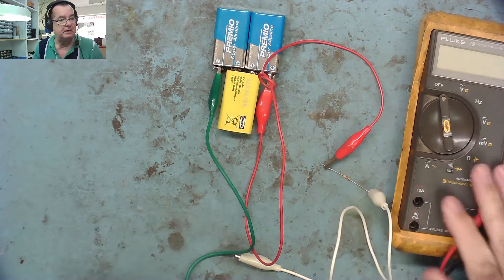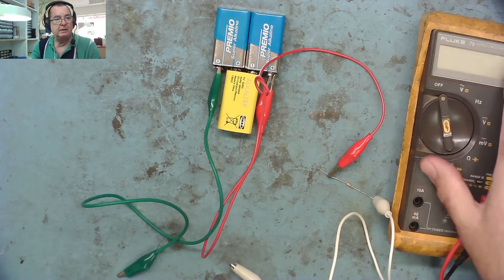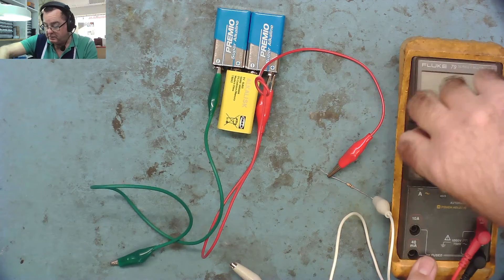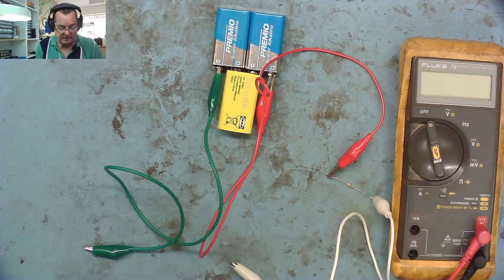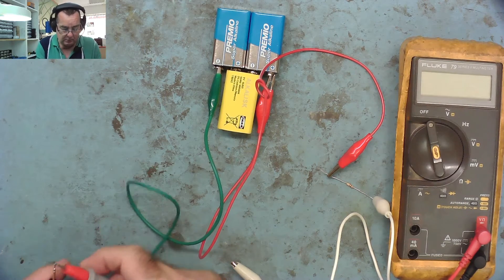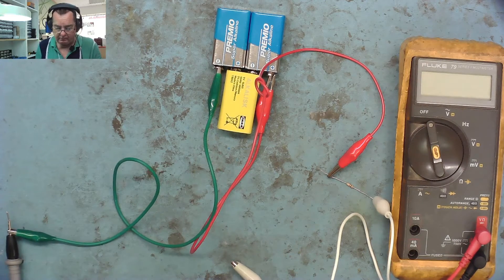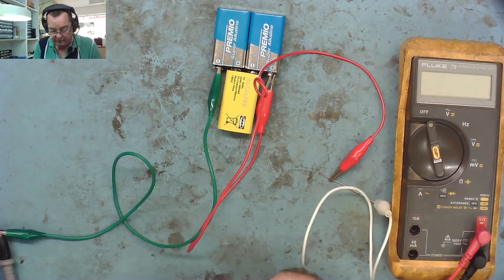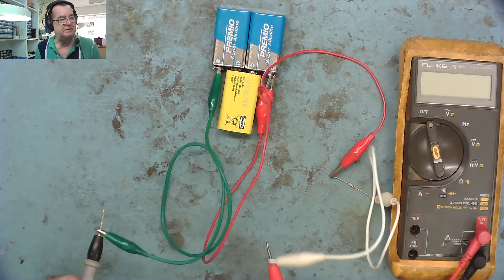There we have it - the resistor is connected to the battery and we have the two crocodile clip leads. This is where we're going to place the multimeter. We'll take the black wire to the negative and the red lead to the positive, and we now have our tester.